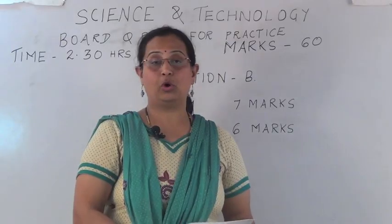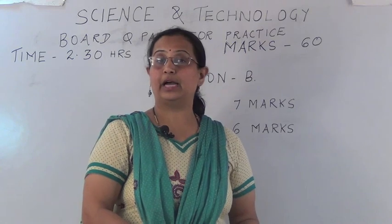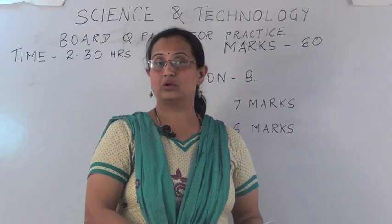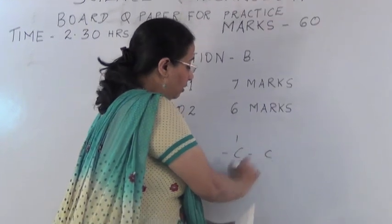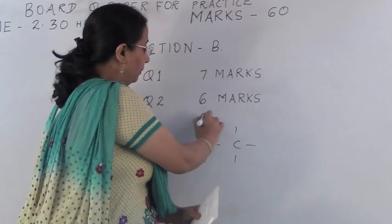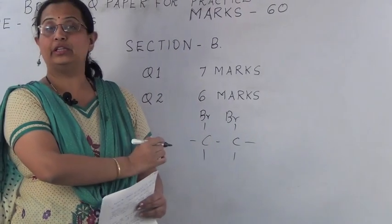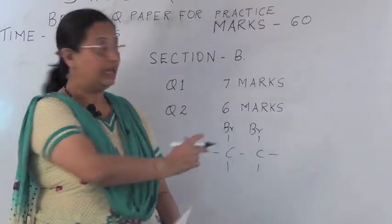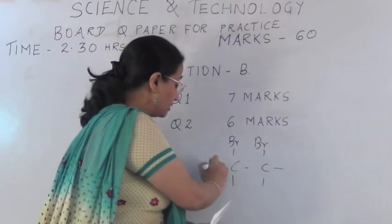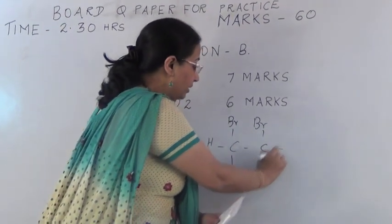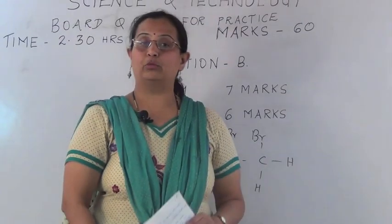The last question of question number 1: draw the structure of 1,2-dibromoethane. Students, remember that you will draw the structure of ethane first, and then substitute the two hydrogen atoms with bromine atoms. This is the correct structure of 1,2-dibromoethane.